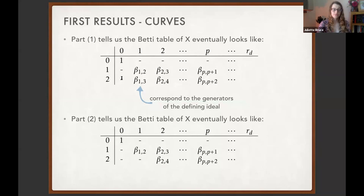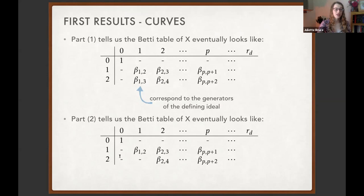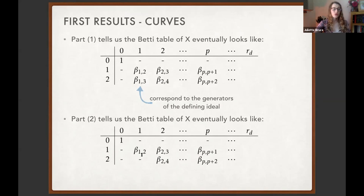This seemed like a pattern: d > 2g+1 gave vanishing in the first spot, d > 2g+2 gave vanishing in the second spot. You might ask whether this continues, and in fact it does — though this wasn't noticed until much later when Mark Green in the 1980s recognized this as part of a bigger story. To tell that story I need to introduce a definition.